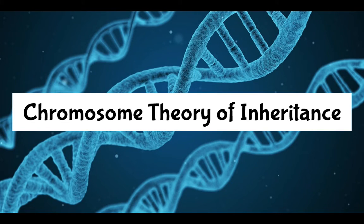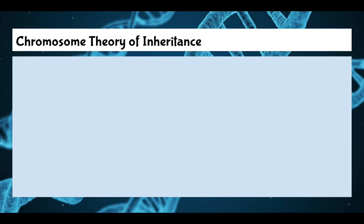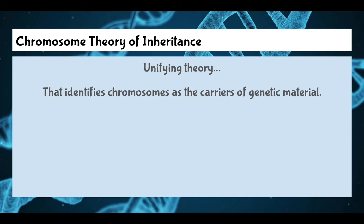This next video in the genetics unit is going to cover the chromosome theory of inheritance. The chromosome theory of inheritance is the unifying theory that says chromosomes are the carriers of genetic material. This is something we've been taking as a basic understanding as we study genetics. You know that DNA carries genetic material, but at the time of Gregor Mendel's studies, he did not know that. We are now operating with the understanding that DNA is the carrier of our genetic information.